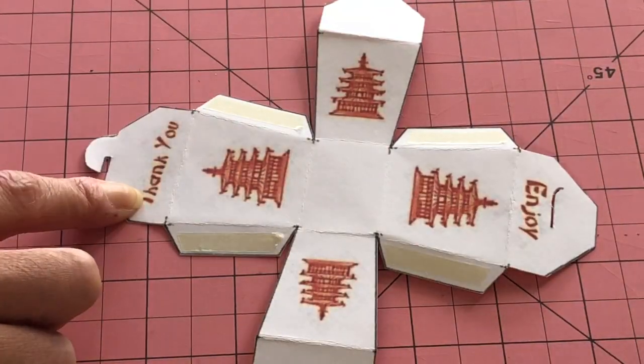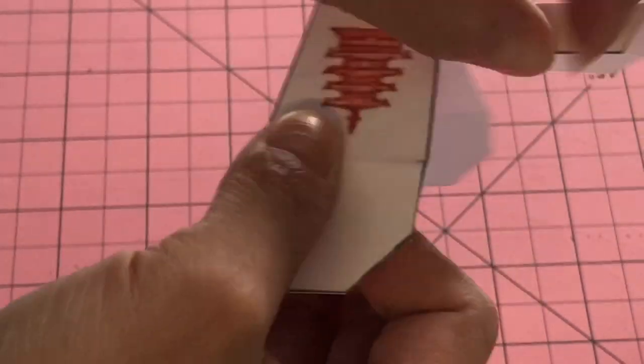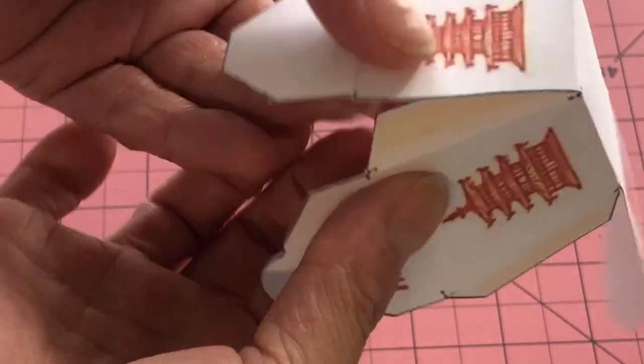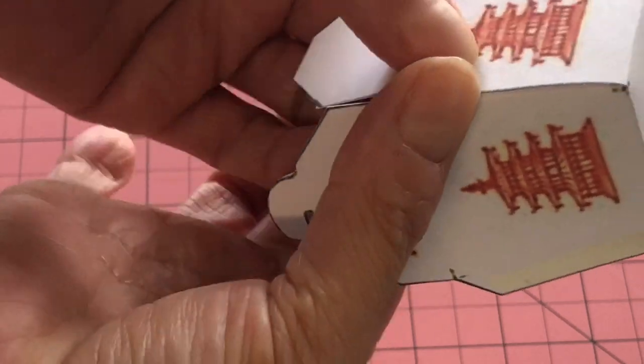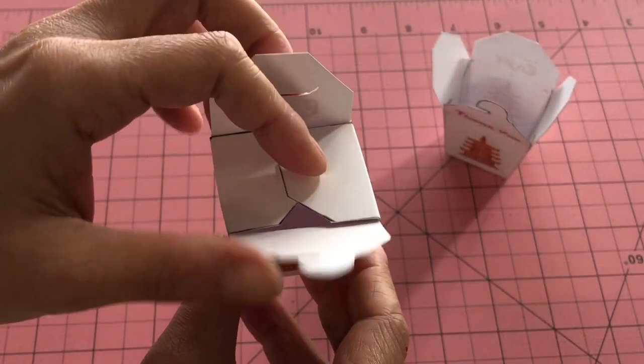Then apply glue to the tabs. We chose double sided tape. Now seal all four sides of the box. This is how it looks so far!